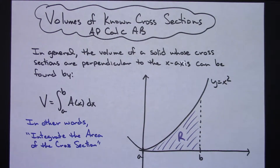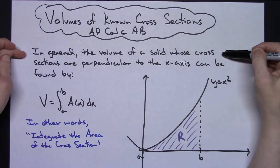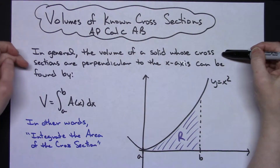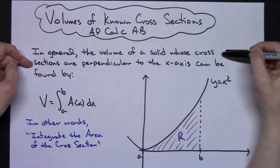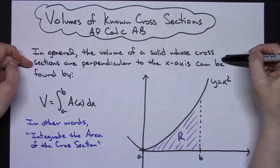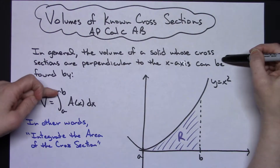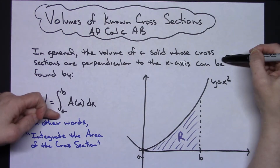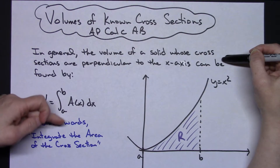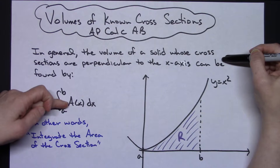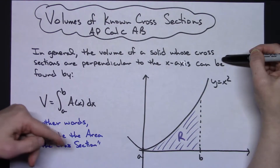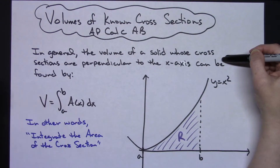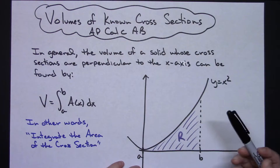In general, we're going to find the volume of a solid whose cross sections are perpendicular to the x-axis by integrating from A to B the area of our cross section. We're going to integrate the area of our cross section.